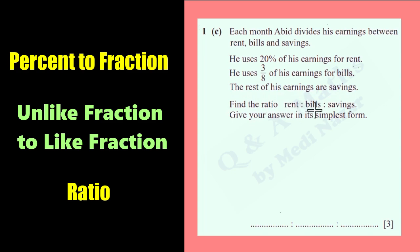Find the ratio rent-bills-savings. Give your answer in its simplest form. These two are given, but they are not written in the same format. The rest of the earnings is not given.